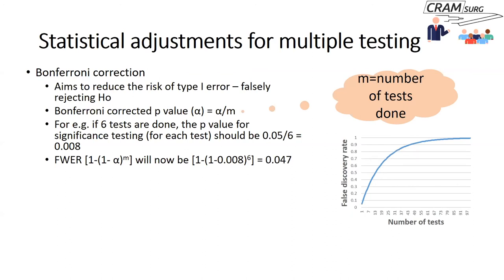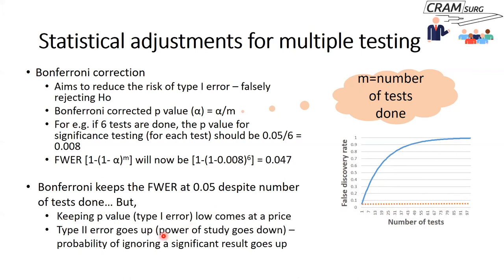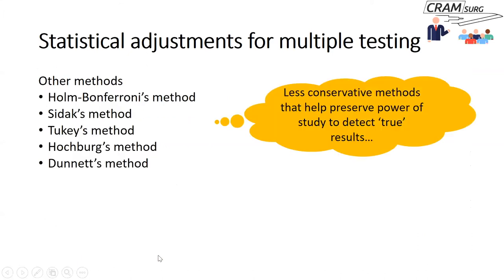Going back to the graph showing the relationship between number of tests and false discovery rate — if you apply the Bonferroni correction, you can keep the false discovery rate to 0.05 or less. However, the problem is that keeping type 1 error low comes at a price: it increases your type 2 error. In other words, the power of your study goes down, which means the probability of ignoring a significant result goes up.